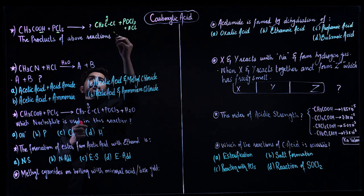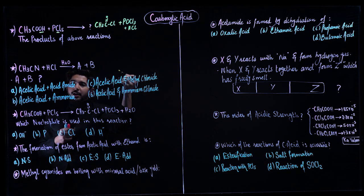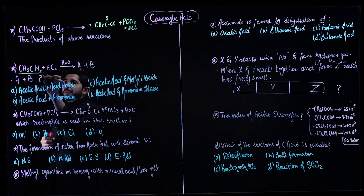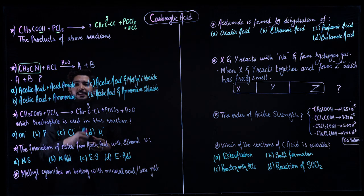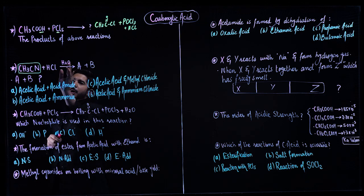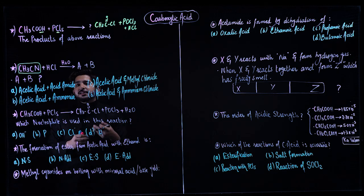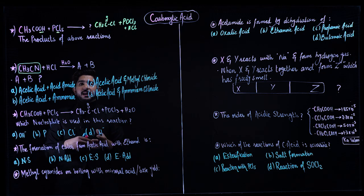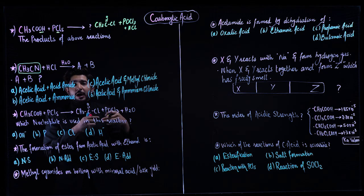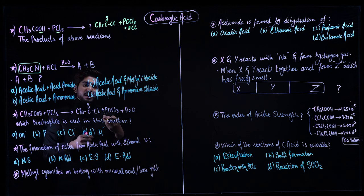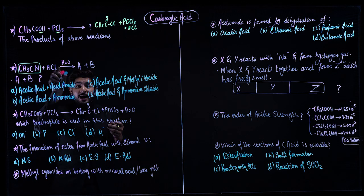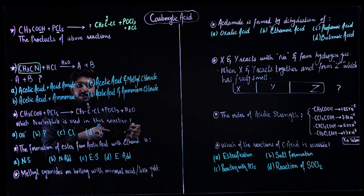Question number two: methyl cyanide, acidic hydrolysis is happening with HCl in presence of H2O, and we are getting A and B as products. Most reactions in past papers are relevant to equations, so you should have command over reactions and can easily identify the products.